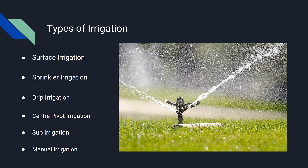Manual Irrigation: This is a labor-intensive and time-consuming system of irrigation. Here, the water is distributed through watering cans by manual laborers.